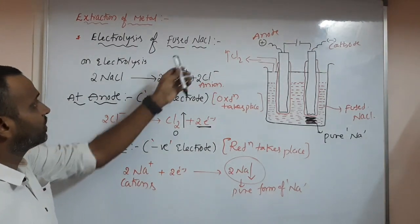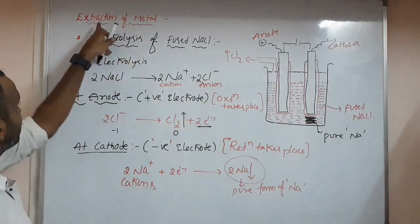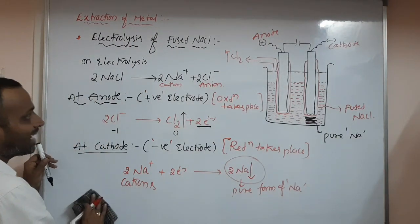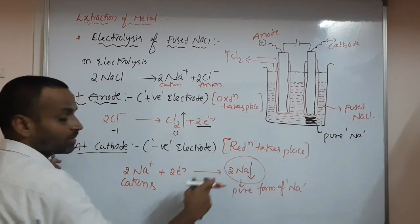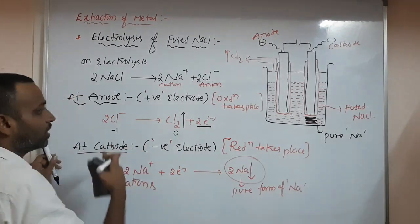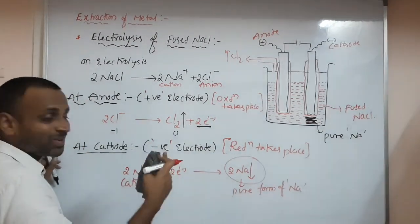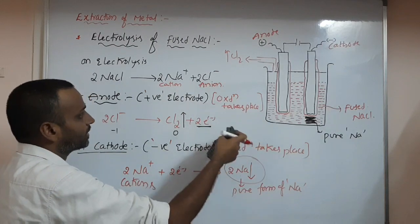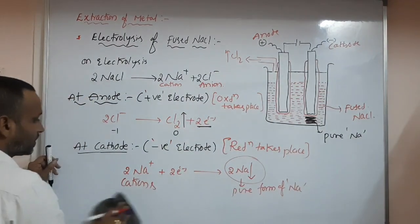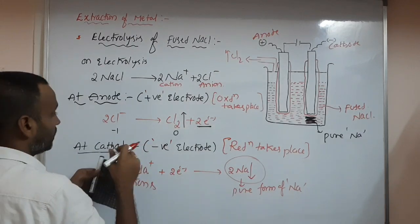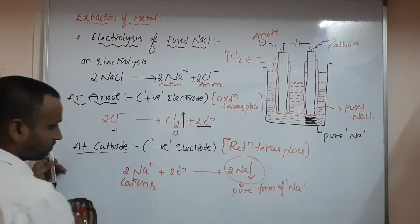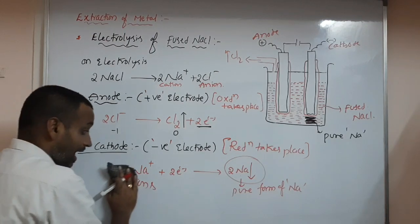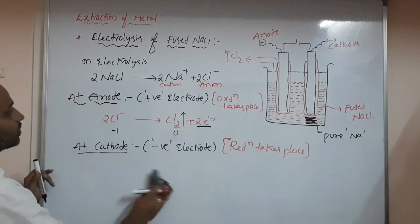If you use fused KCl, potassium will come — that is why this is called extraction of metal. Now, please take a screenshot. Next I will give you electrolysis of aqueous NaCl — only the cathode reaction will change. I will explain why.